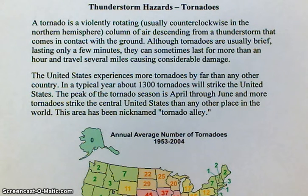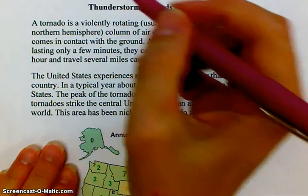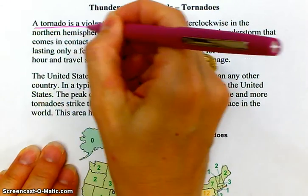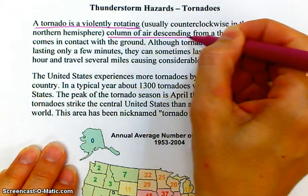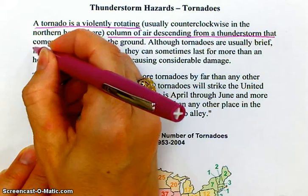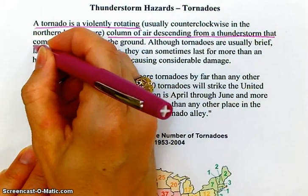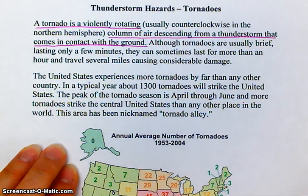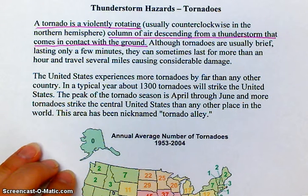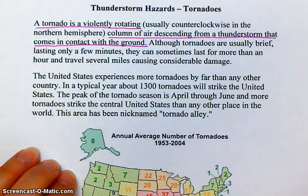A tornado is a violently rotating column of air — it usually rotates in a counterclockwise manner in the northern hemisphere — that descends from a thunderstorm and comes in contact with the ground. If it doesn't come in contact with the ground, we usually just call it a funnel cloud.